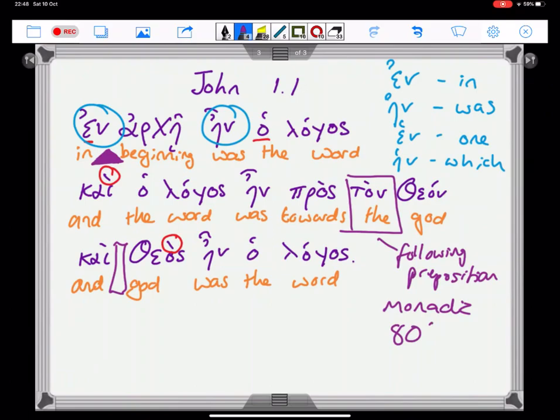These are words that, where there is only one of them, are called monadic nouns. Something like 80% of the time, they are with an article, where you wouldn't use one in English. This is one of the 20% where you haven't got one.